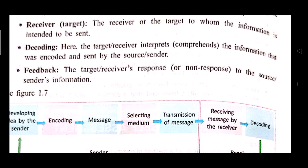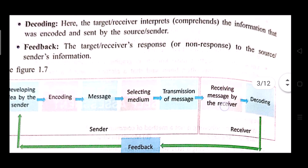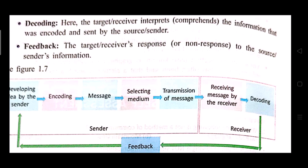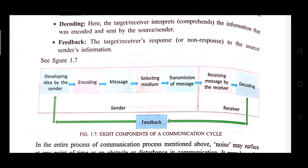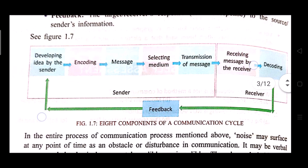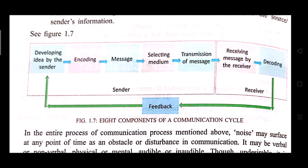Decoding means to convert from one language to another. Before sending the message or information it is to be converted to the mutually understandable language. Here the target or receiver interprets the information that was encoded and sent by the source or sender. And the last component is feedback — feedback means the target or receiver's response to the source or sender's information.